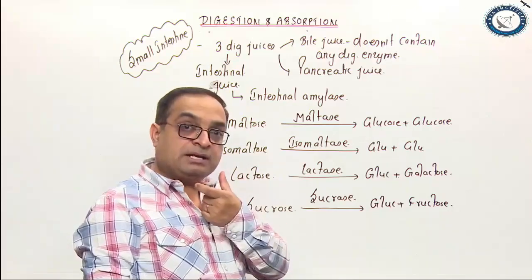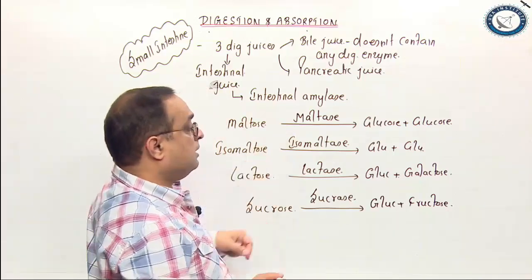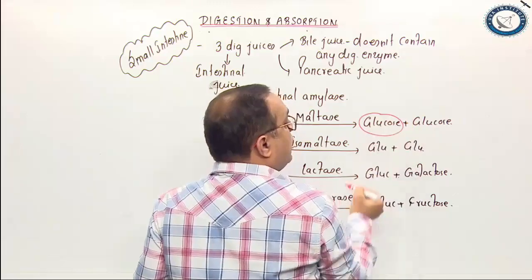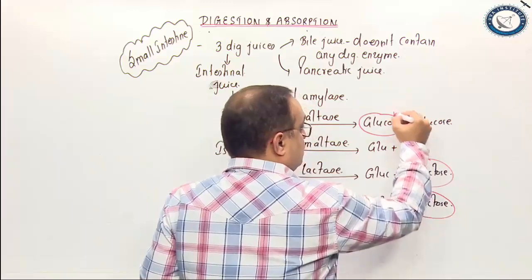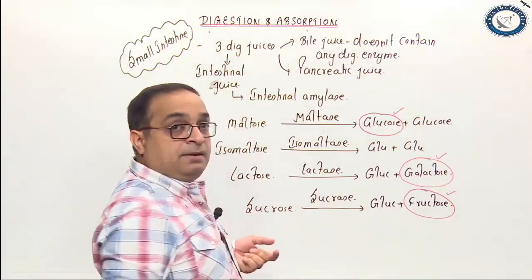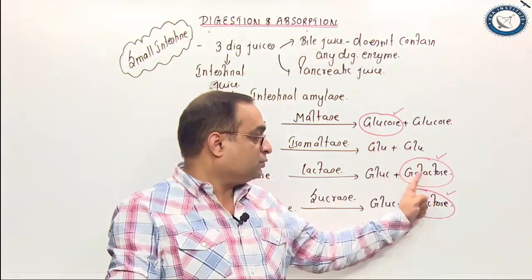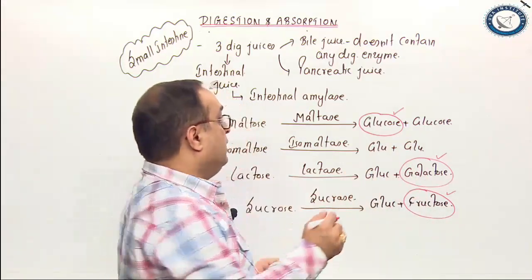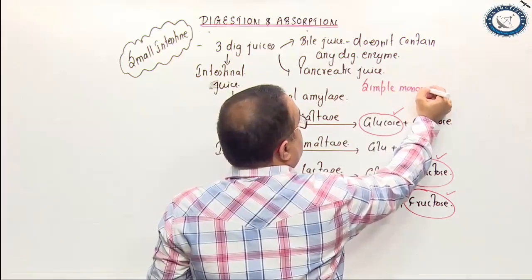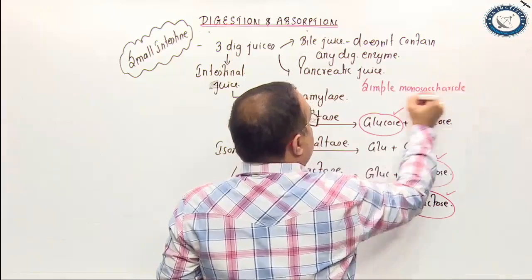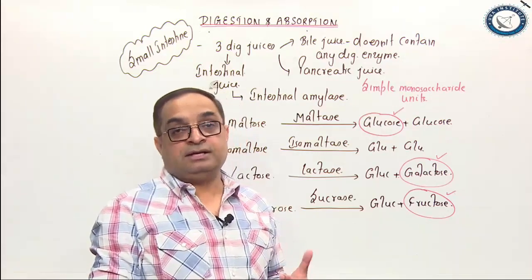Carbohydrate digestion starts in the buccal cavity but is completed in the small intestine. The end products of carbohydrate digestion are glucose, fructose, and galactose — three simple monosaccharide units which are absorbed easily through the villi of the intestine. The main aim of digestion — breakdown of complex food into simpler form for easy absorption — is thus achieved.